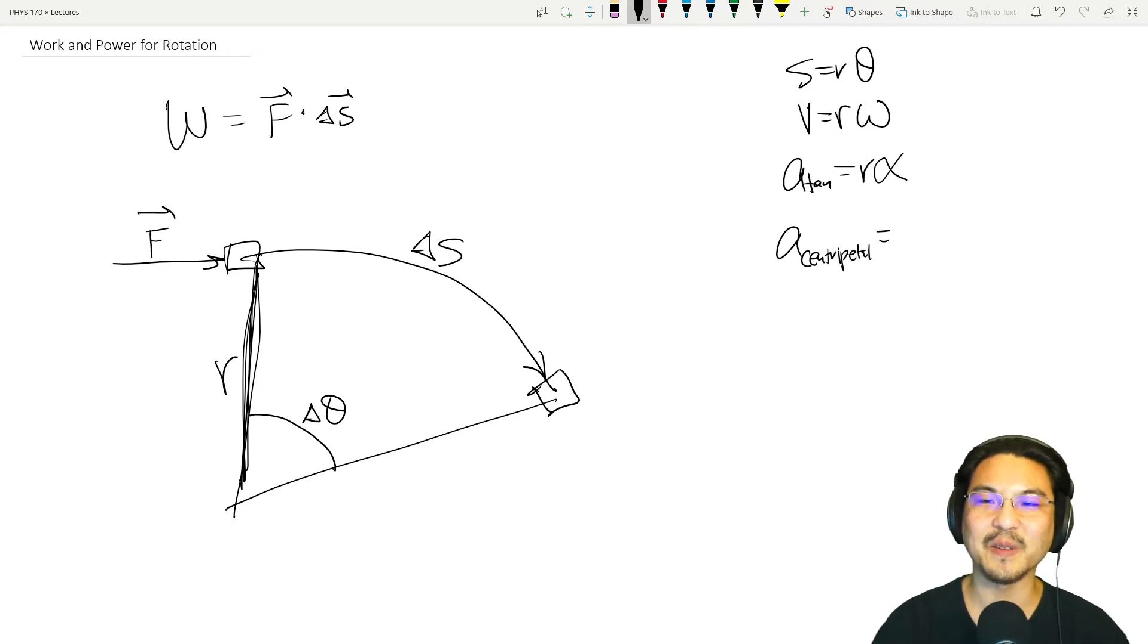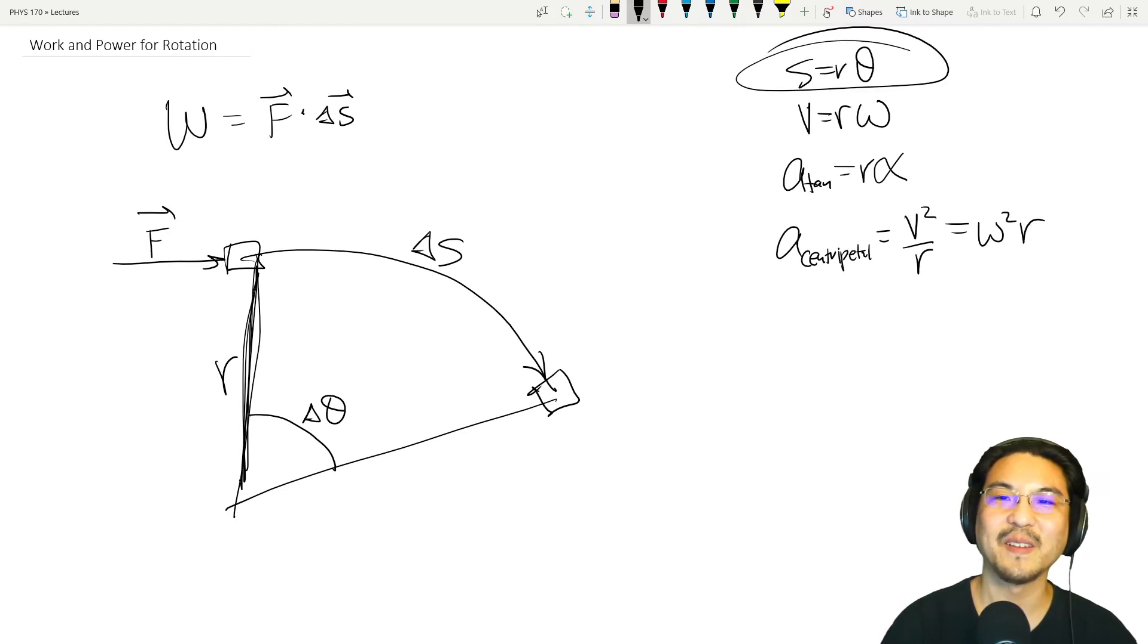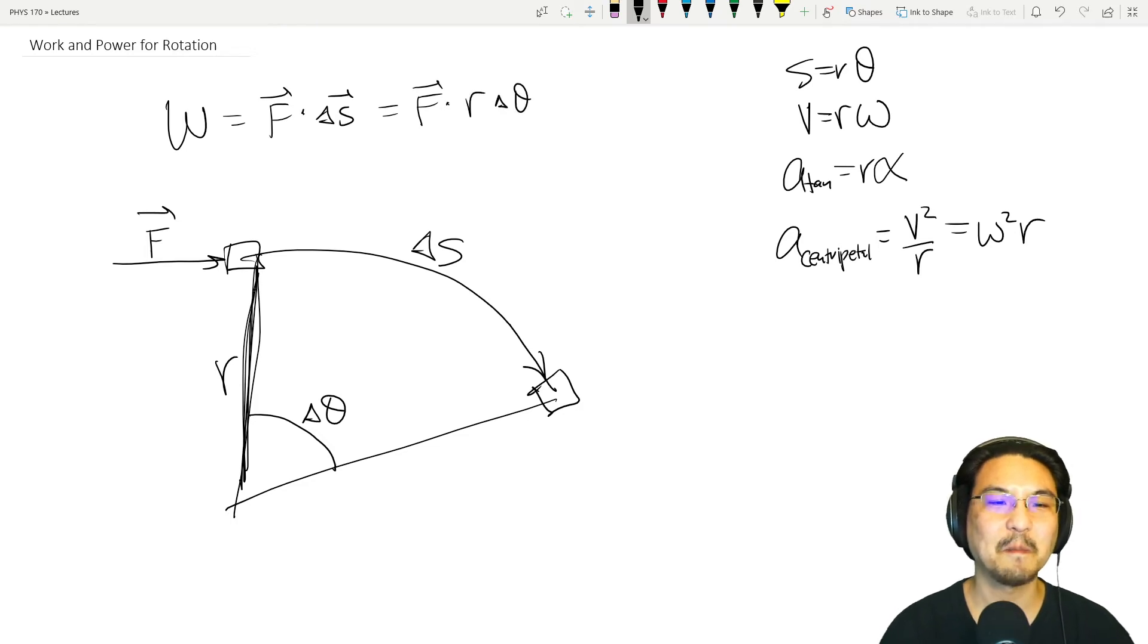And then you know that centripetal acceleration is v² over r. Substitute that there, then you have ω²r. So this is how we relate this to this—Δs becomes rΔθ.